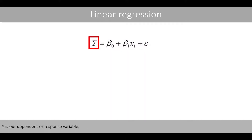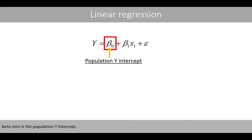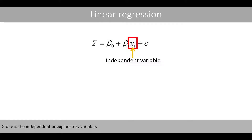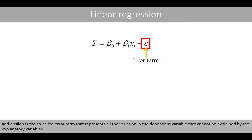y is our dependent or response variable. beta0 is the population y-intercept. beta1 is the population slope. x1 is the independent or explanatory variable. And epsilon is the so-called error term that represents all the variation in the dependent variable that cannot be explained by the explanatory variables.